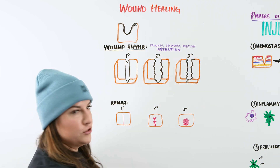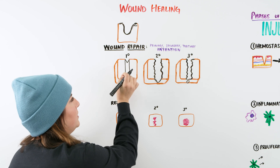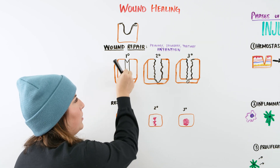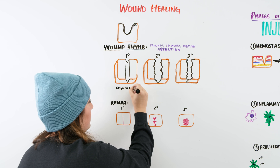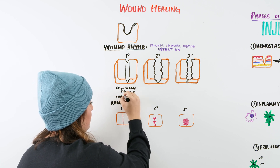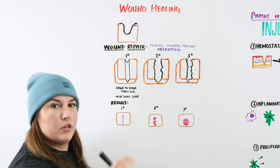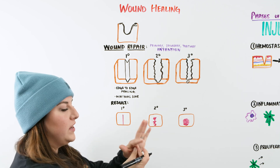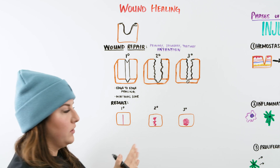We can do primary, secondary, or tertiary intention. Primary intention is where we have some type of approximation of the skin — the skin was cut very cleanly and we are able to bring these edges together really nicely. This is edge-to-edge healing, and it will typically leave a minimal scar over time. The sutures, stitches, or staples holding them together allow the healing process to occur in a very small area.